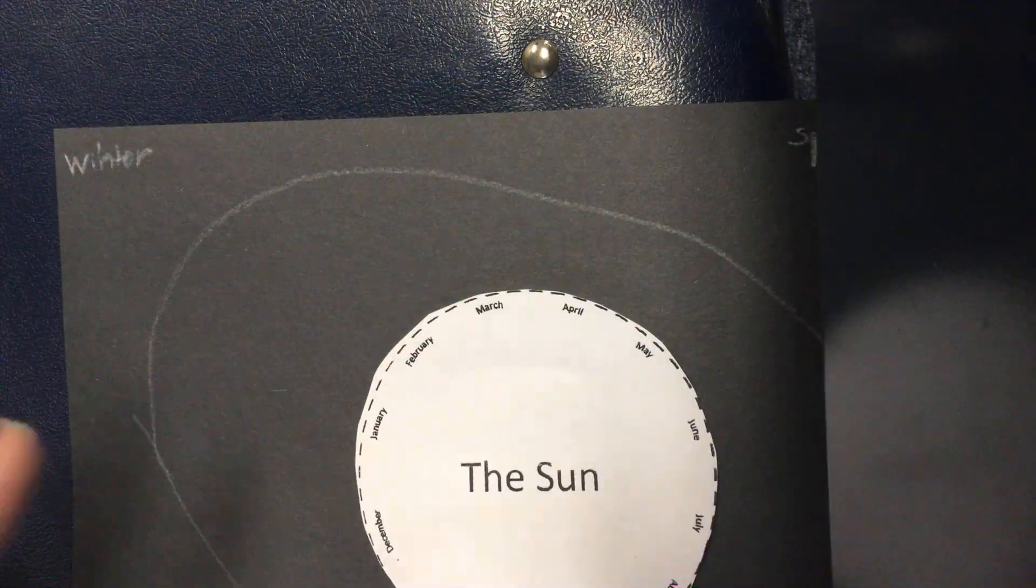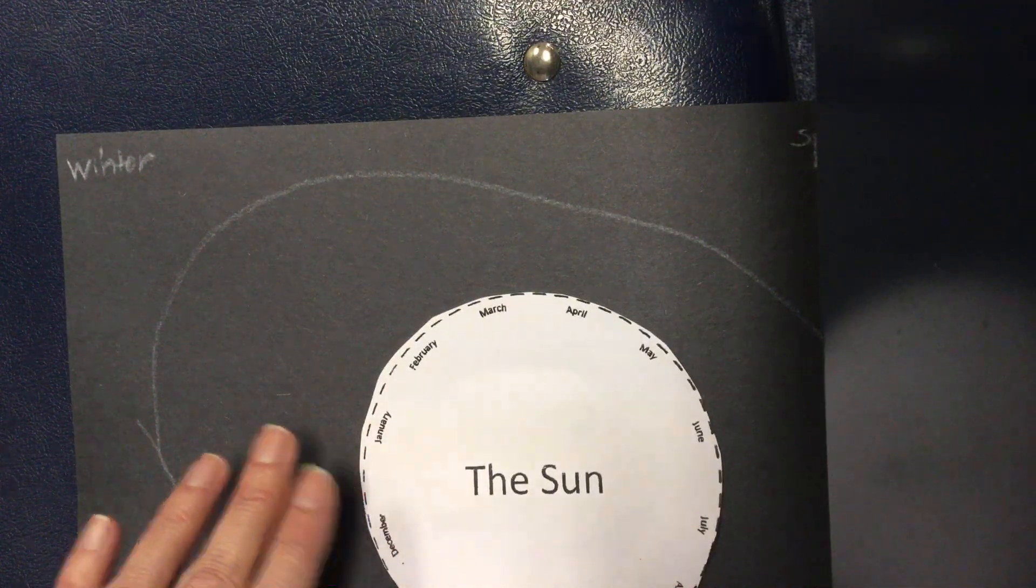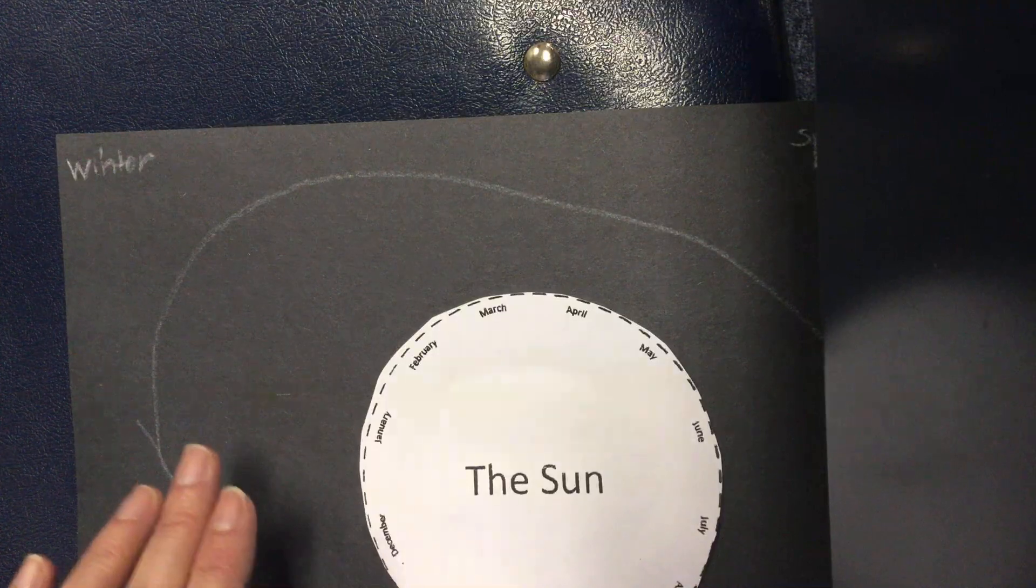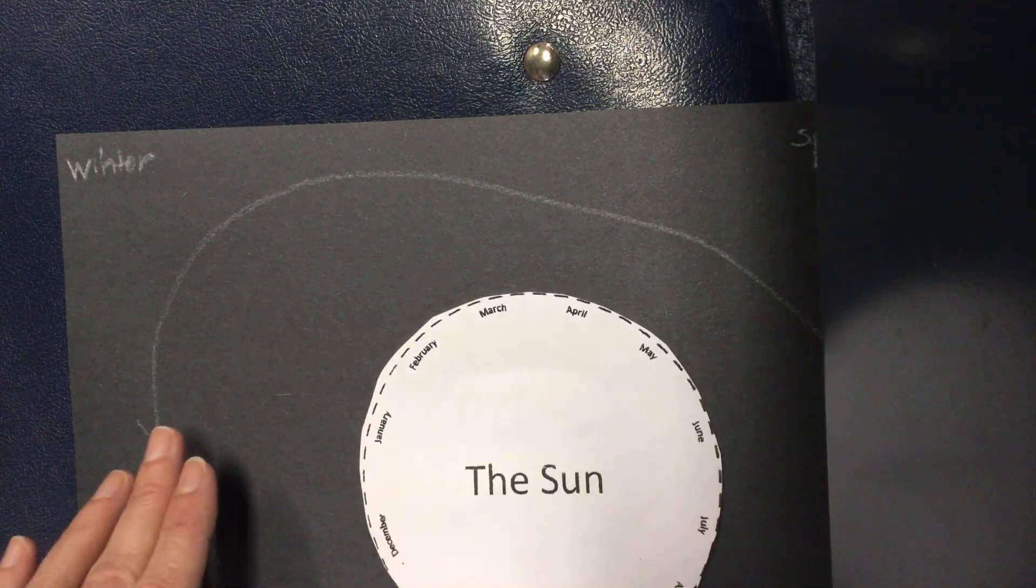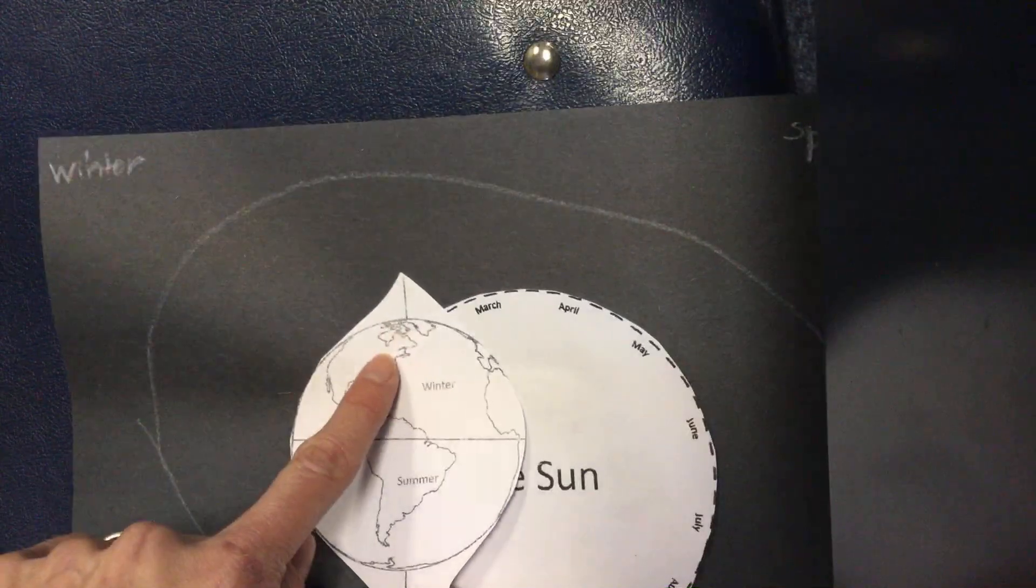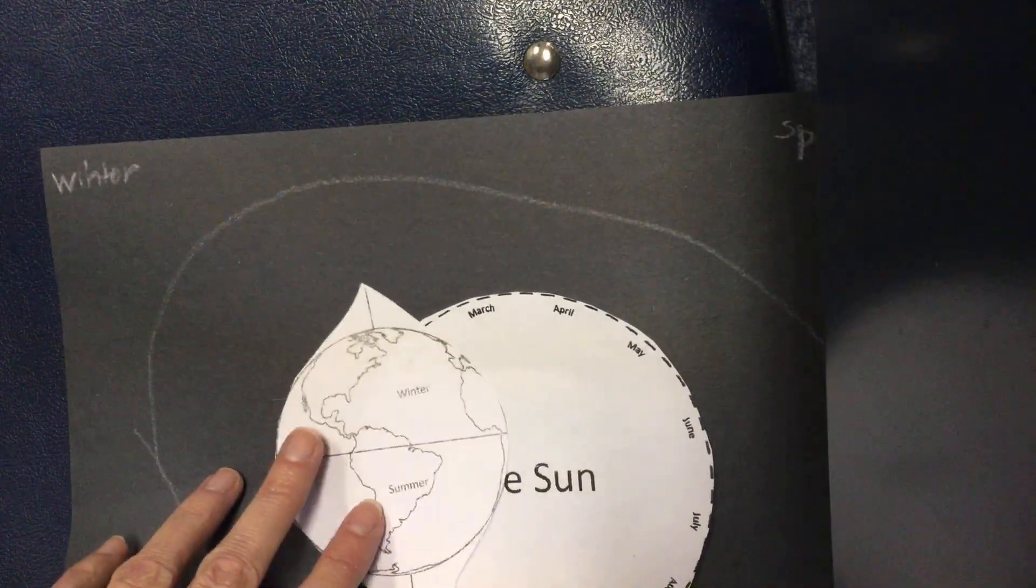Right now we are experiencing winter, so I want you to find your Earth that has winter in the northern hemisphere like we're having now, and summer in the southern hemisphere.